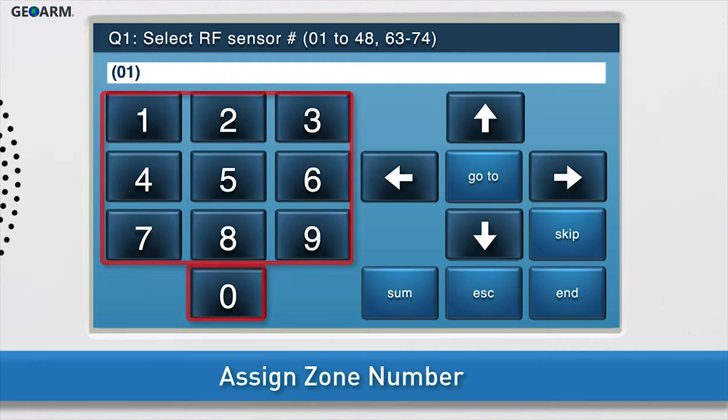You will see the new selection appear in the answer box. Once the desired zone number displays in the answer box, press the down arrow to go to the next sub-question.